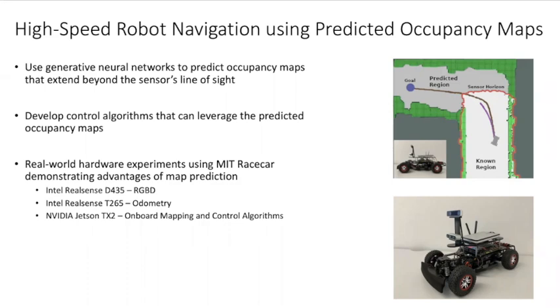And finally, we perform preliminary real-world hardware experiments using the MIT race car where we show the advantages of using map prediction with the onboard sensors and platform for compute.